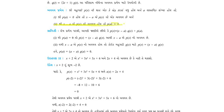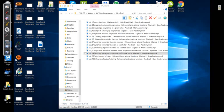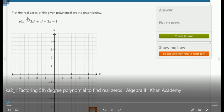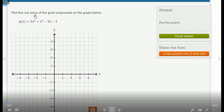In our video, we have a graph. On this graph, we have x plus 2 equals 0 and x equals minus 2. We have to understand this graph — specifically, we need to understand the real zeros of the given polynomial. We have to plot the real zeros of the given polynomial.